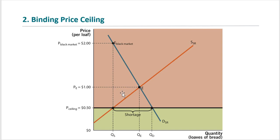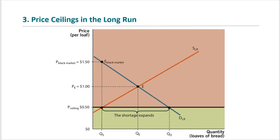Now let's look at the effect of a binding price ceiling in the long run. Without the price ceiling, equilibrium price PE equals $1 and QE is the equilibrium quantity. Since we are considering the long run, note that the demand and supply curves are more elastic. On the supply side, bakers respond in the long run by producing less bread and making products not subject to price controls. On the demand side, in the long run consumers will attempt to take advantage of the price ceilings by changing eating habits to consume more bread.